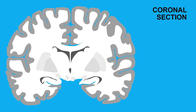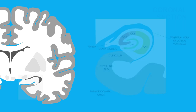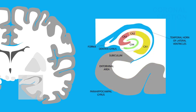Here is a coronal cross-section of the brain. Let's zoom in on the hippocampus so that we can observe the structures within. Note the gray matter region of the parahippocampal gyrus towards the bottom. The hippocampus is encompassed by the lateral ventricle.